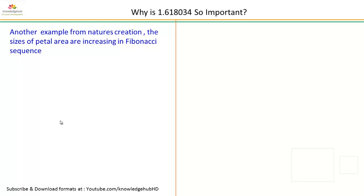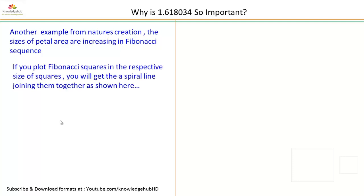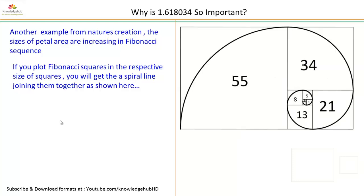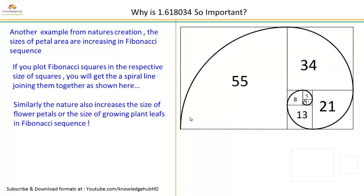Another example from nature's creation: the size of petal area are increasing in Fibonacci sequence. If you plot the Fibonacci squares in the respective size of squares, you will get the spiral line joining them together as shown here. You can find if I plot 0 plus 1, 1 square, then another 1 square, and the area of 2, and the area equal to 3 units, then area equal to 5 units, then 8 units and 13 units, 21 and 34 and 55, so on. If I go on to connect the diagonals of the square, you will get a perfect spiral line.